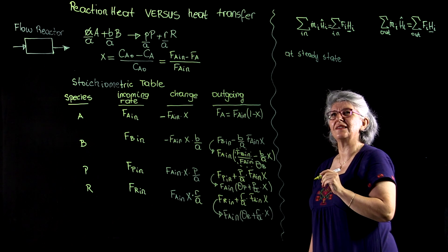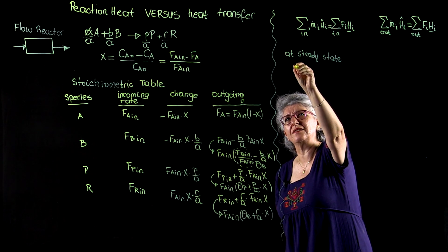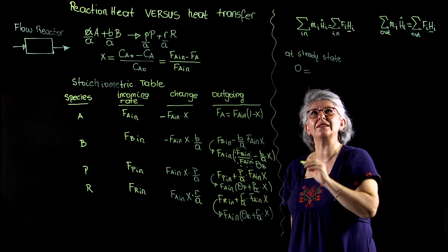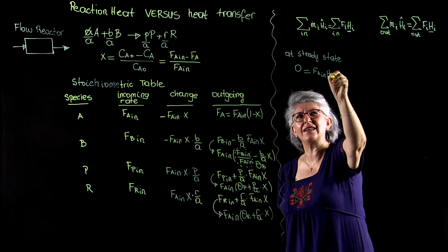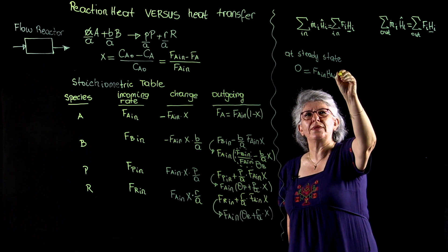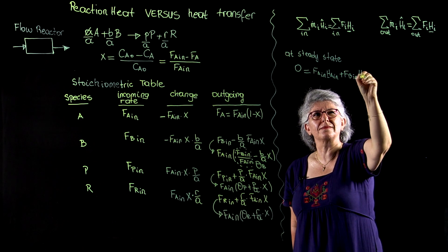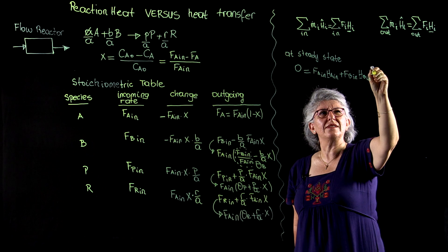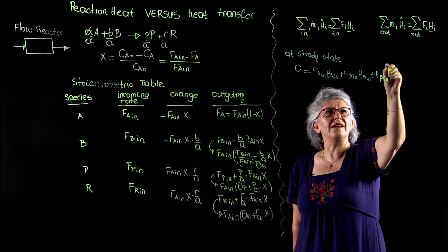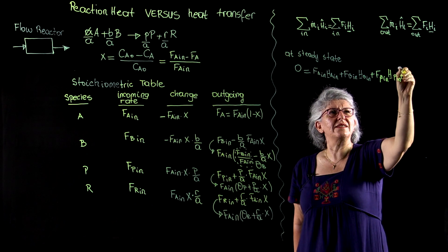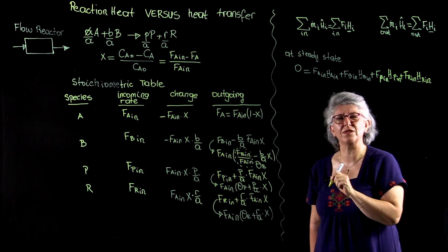As a result, my time-dependent term in the energy balance doesn't have to enter into consideration. So, 0 equals: for the incoming stream, FA_in times HA_in, plus FB_in times HB_in, plus FR_in — or FP_in — times HB_in.